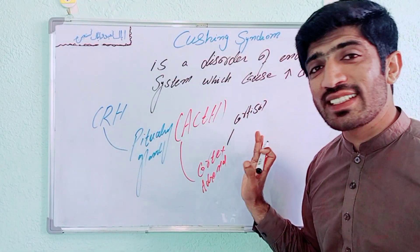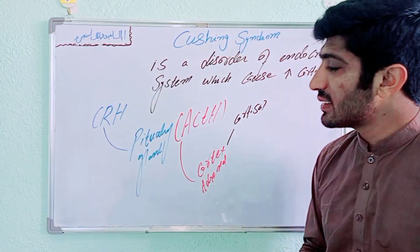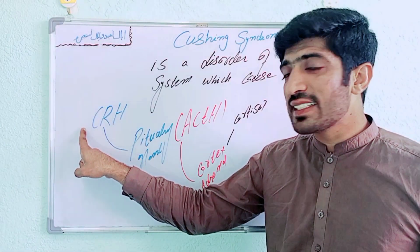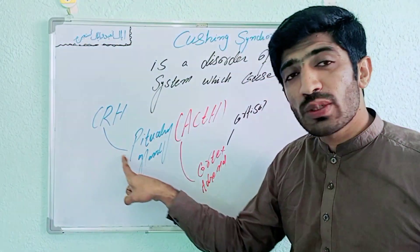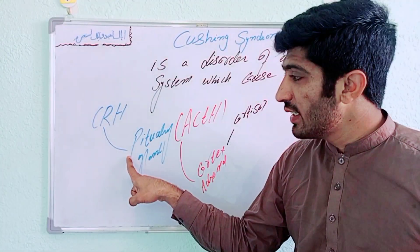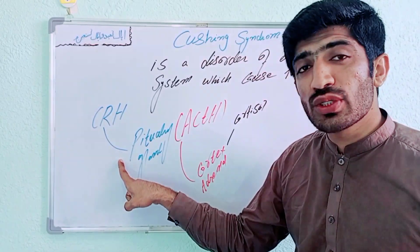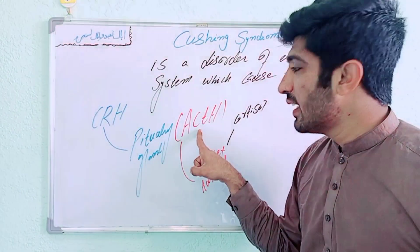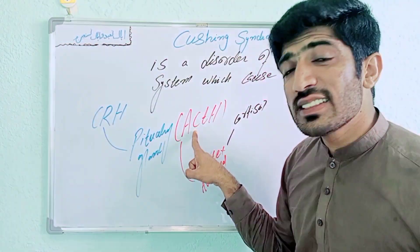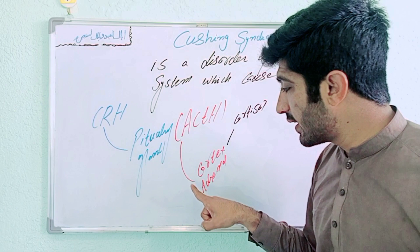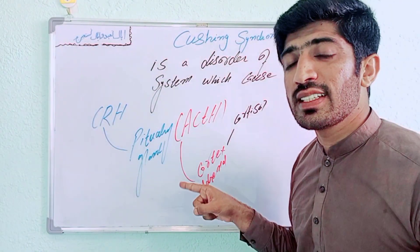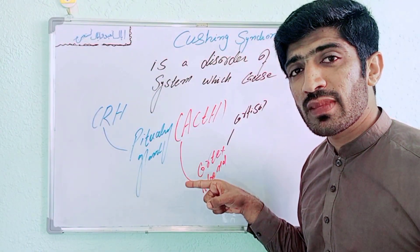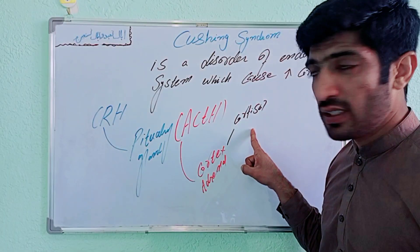So in this way, cortisol is secreted in the blood. First, the hypothalamus secretes CRH and sends it to the pituitary gland, stimulating it to create ACTH. This ACTH comes to the adrenal gland and stimulates it to create cortisol.